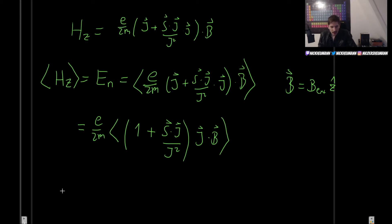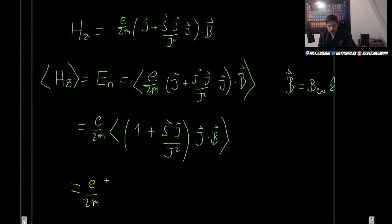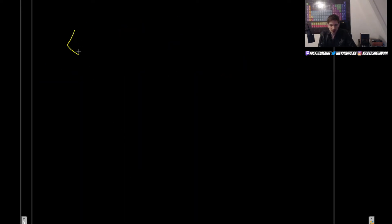Let's now do the actual computing of each one of these expectation values. The expectation value of 1 is just 1. But what is the expectation value of S dot J? We already know the other expectation values, so let's go to a new page. What is the expectation value of S dot J?